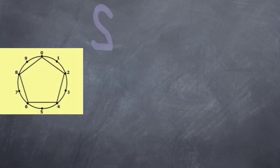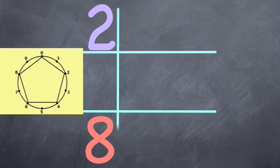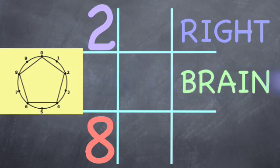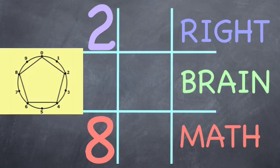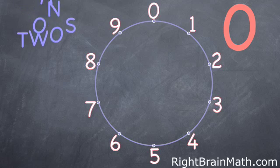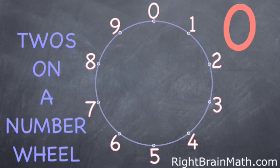This is some pictures of how you can create the twos and eights times tables. This is how the right brain sees math. And this is a number wheel, which is a number line rolled into a circle.